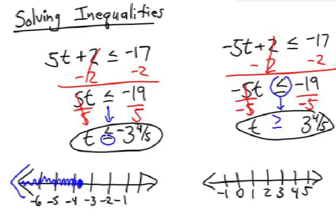On the other equation, I have t greater than or equal to 3 and 4 fifths. This is a positive 3 and 4 fifths. Include that number, black solid dot. Color it to the right, showing it goes forever with a large arrowhead. Good job.